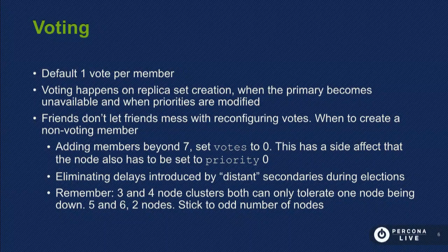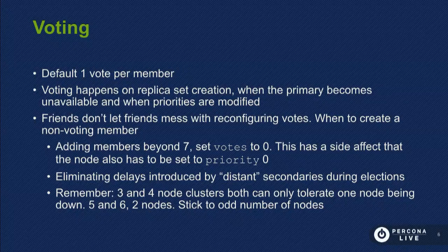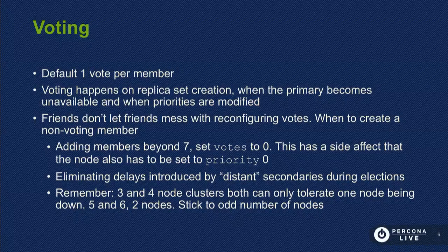When do you want to change votes? When you are adding more members than the baseline seven members per replica set, because every member after the seventh one has to be non-voting. The only way to do it is to set its vote to zero. So if you want to add eight, nine, ten, or eleven nodes across your cluster, you'd set the votes to zero first. That has a side effect on priority, which we'll go over a little bit later.